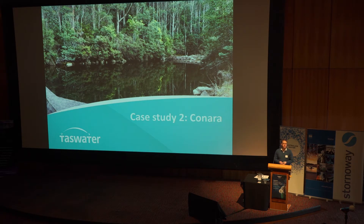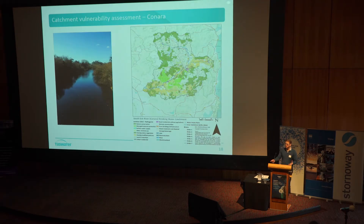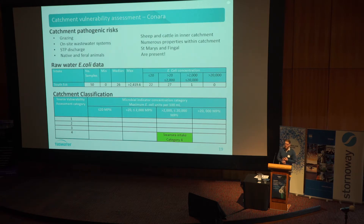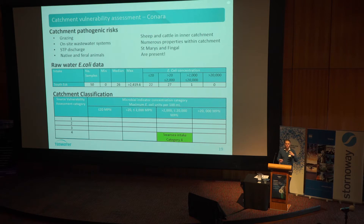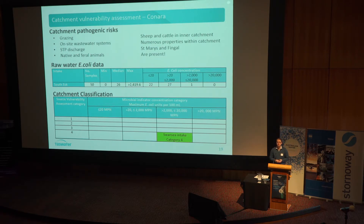Case study two was Kinara. This was a bit different — we actually did our catchment risk assessment prior to building our new water treatment plant, so we had that information before the design. Again, we did all the mapping of land uses and went on-site to validate. We were again in a situation with sheep and cattle in the inner catchment, numerous properties probably with on-site wastewater systems, and STP discharges from Fingal and St. Mary's — which put us in a category four catchment. Our E. coli data, though we had less of it, still had the highest concentration in the 2,000 to 20,000 range, confirming we were in category four.